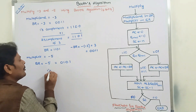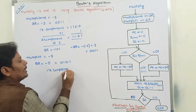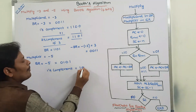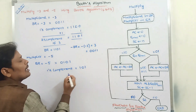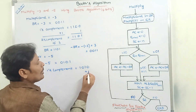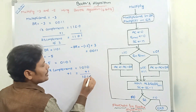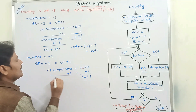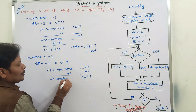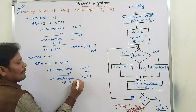We find the 1's complement of 0101: 0 is complemented as 1, 1 is complemented as 0, 0 is complemented as 1, 1 is complemented as 0. Then we add plus 1 at the LSB side, giving us 1011. So 1011 is the 2's complement of 5, which is nothing but minus 5.